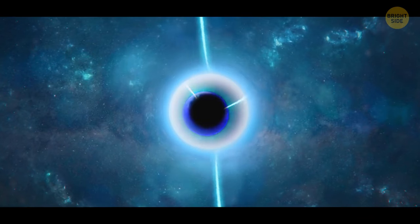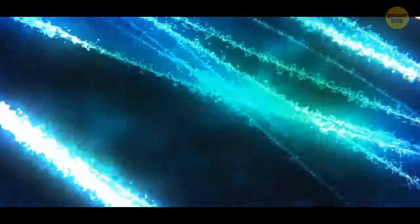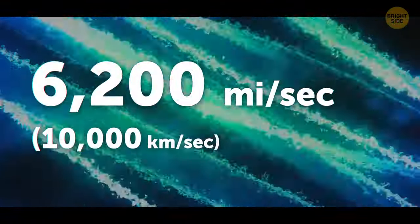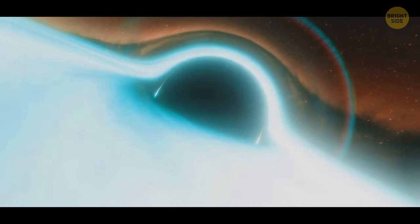The black hole sometimes releases beams of energy into space. Sizzling plasma flies out at 6,200 miles per second as the black hole finishes destroying the star. About half of the star's mass is consumed, while the rest is ejected into space.